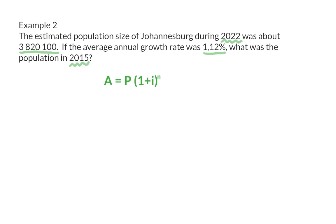Again, we can substitute into the formula. Here, the future size of the population is that of 2022, and that is the 3,820,100. The present size is that of 2015, which we need to calculate, and the growth rate was 1.12%, so we need to divide by 100. Here, the period is 7 years, from 2015 to 2022.